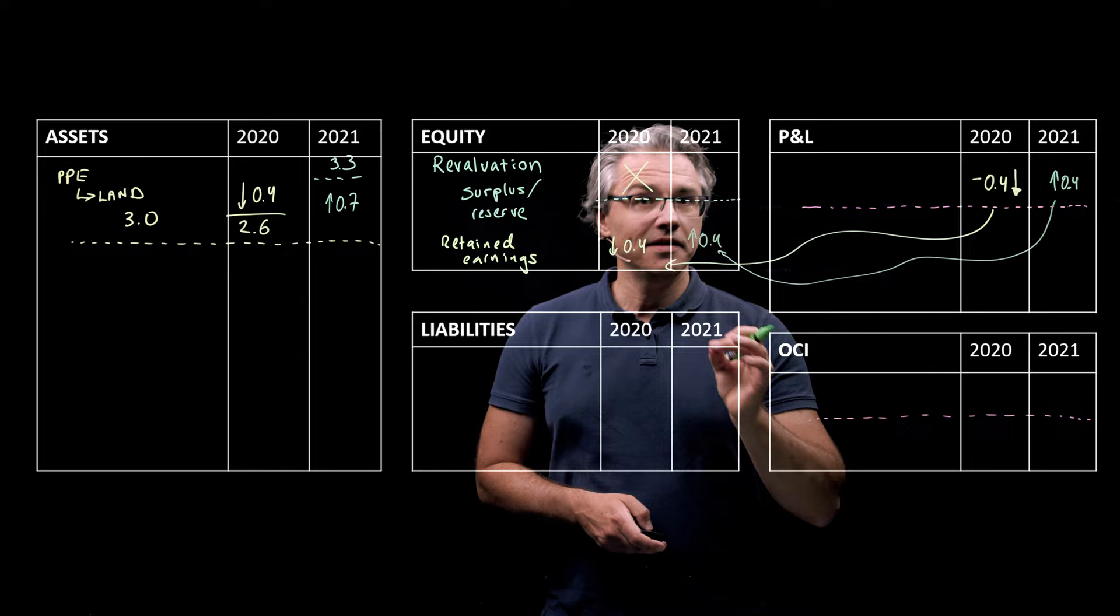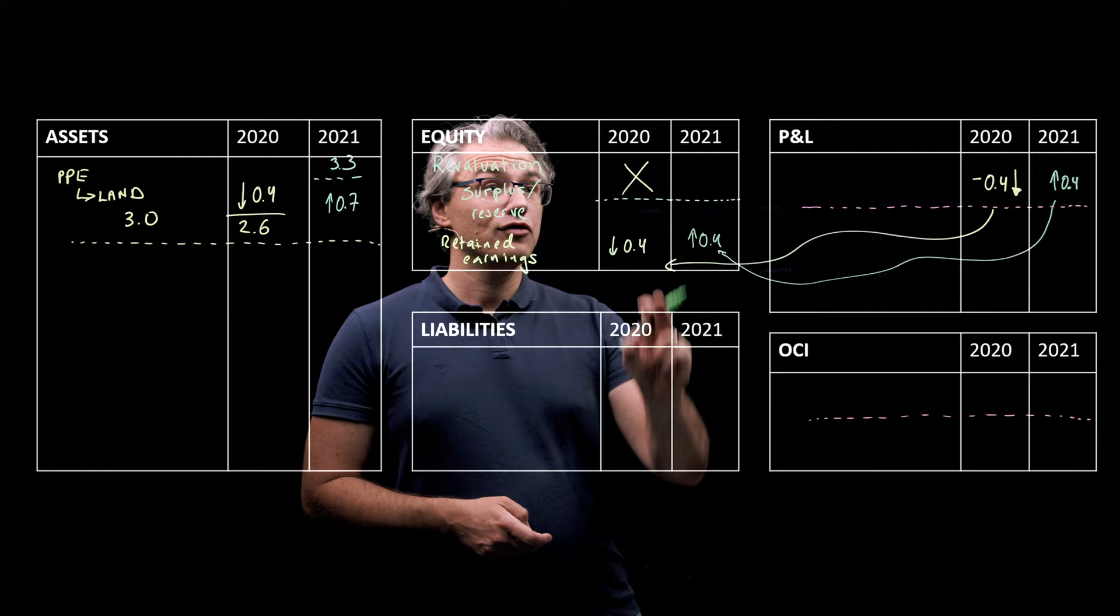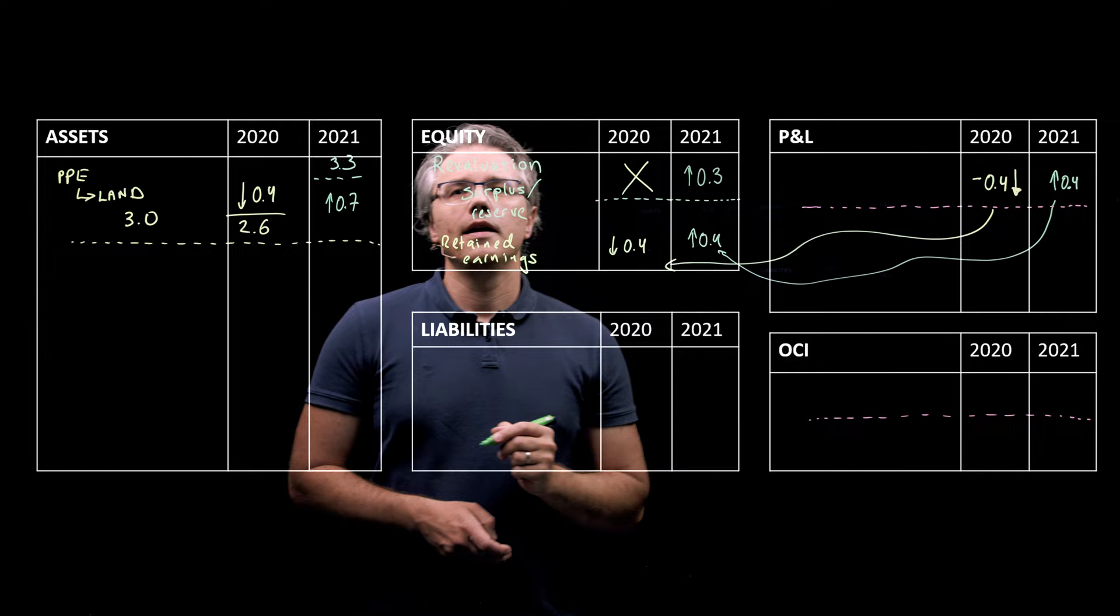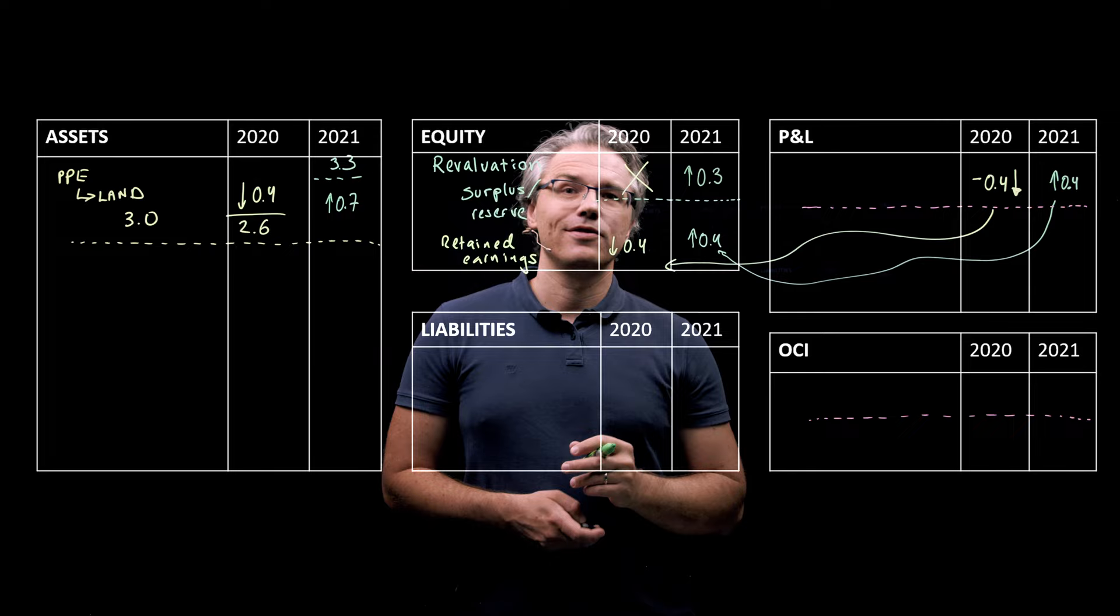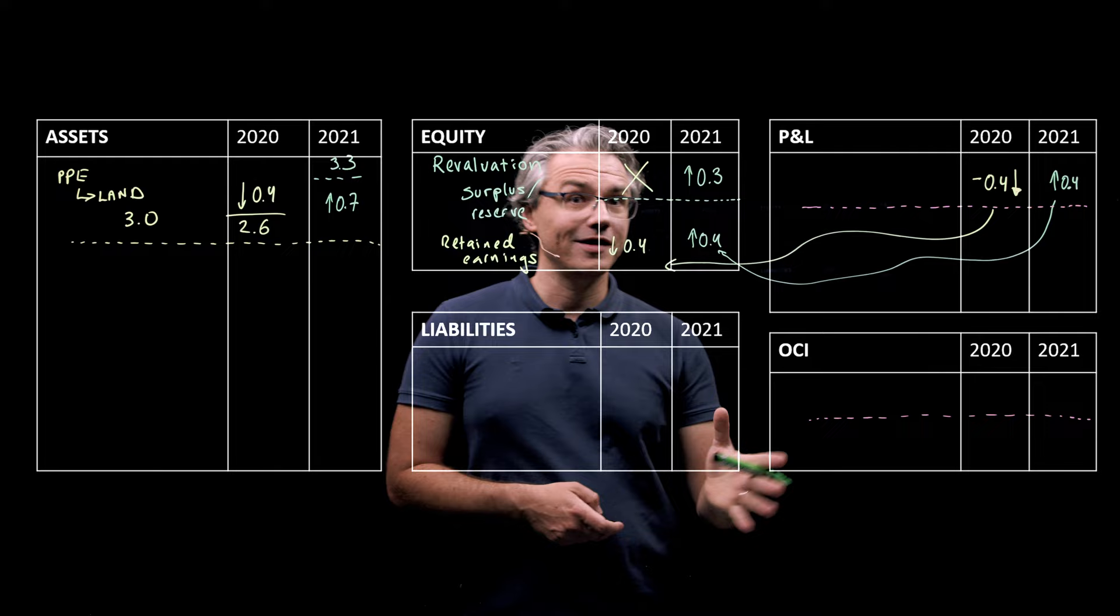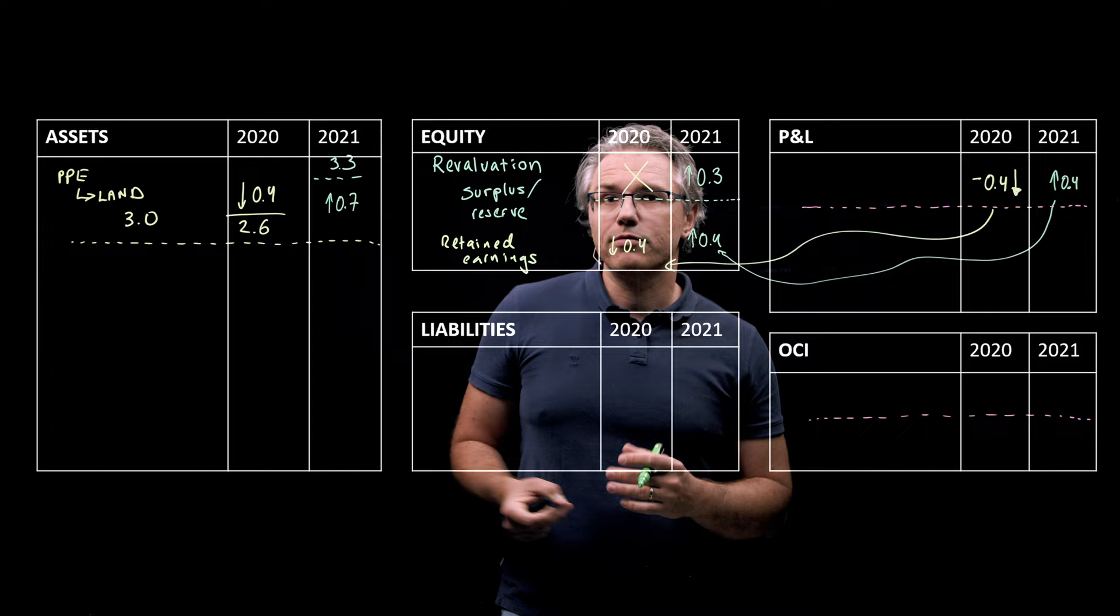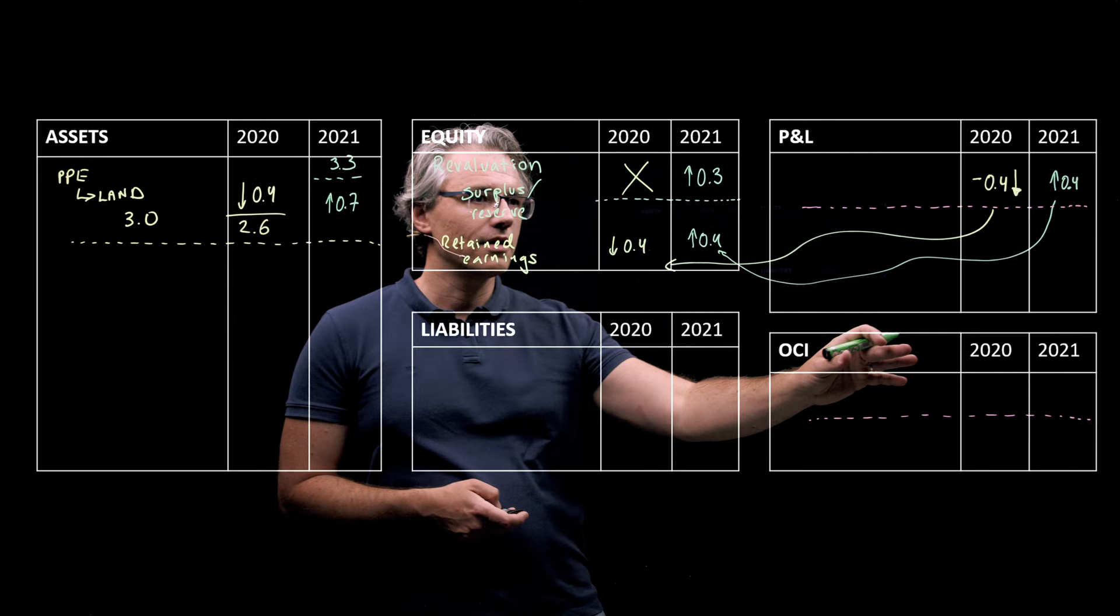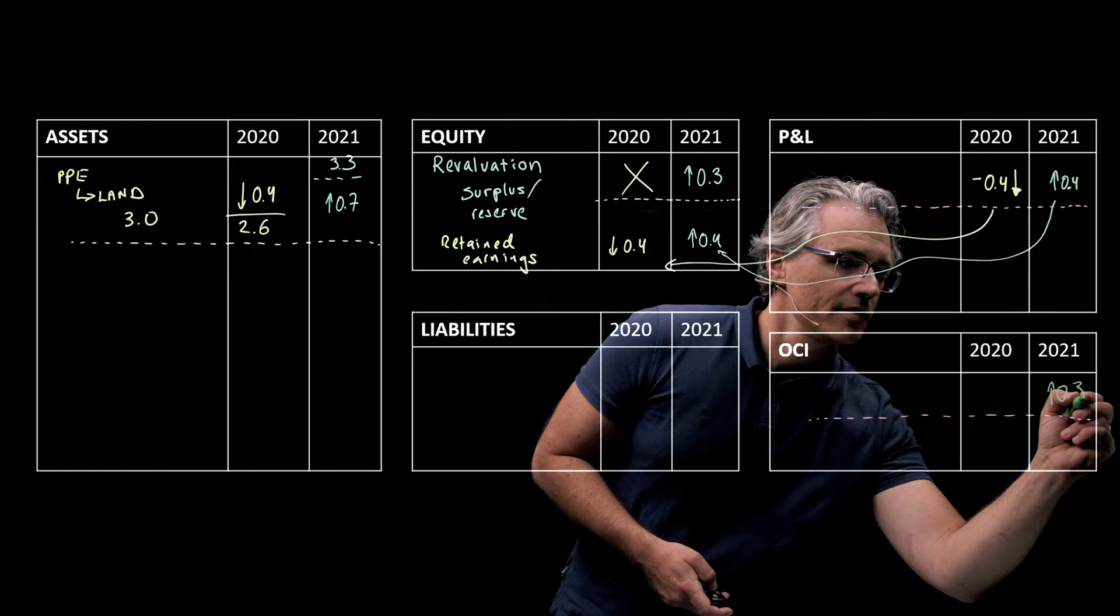And on top of this, the additional gain, that was 0.3 million, that's taken to revaluation surplus, 0.3 million. And as I told you in the previous video, any gains or losses which bypass the income statement must be presented within other comprehensive income as well. So, this 0.3 of additional gain wasn't taken to P&L because it wasn't reversing a previous loss. So, it's not only displayed under revaluation surplus, but also over here in the 2021 column within OCI, 0.3 with an upward arrow or a plus.